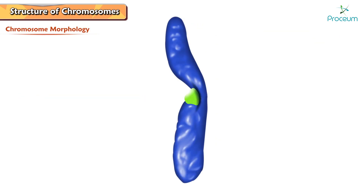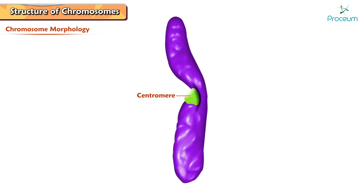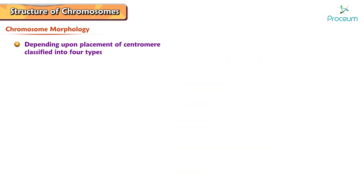Chromosome morphology: chromosomes are rod-shaped structures, each consisting of two chromatids held together at the primary constriction — the narrower area containing a pale-staining region called the centromere. On either side of the centromere, a chromosome has two arms designated as the short arm (p arm) and the long arm (q arm).